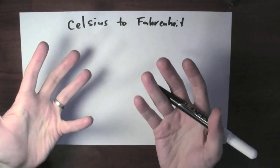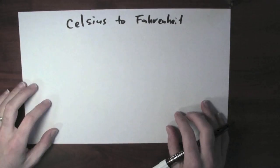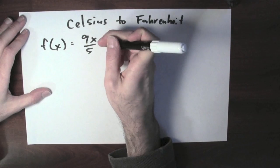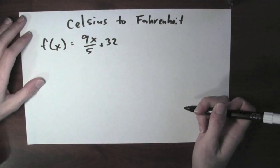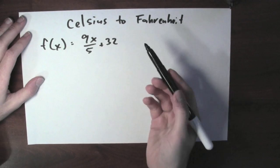Here's one: unit conversion from Celsius to Fahrenheit. These are two different temperature scales. The function f of x is 9 times x over 5 plus 32. So this is just a linear function - it's a number times x plus a number.